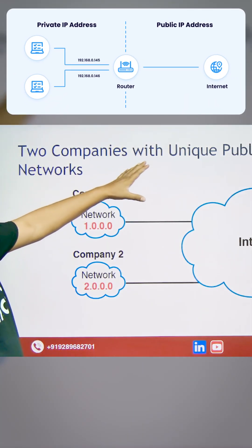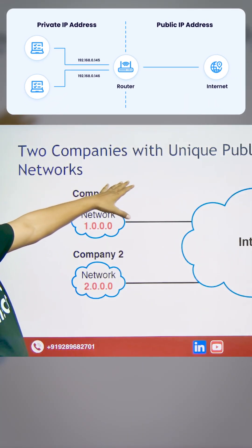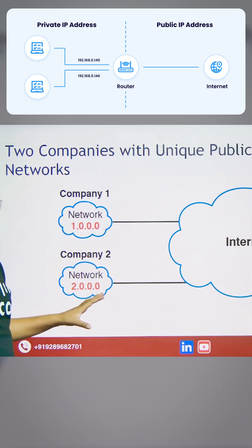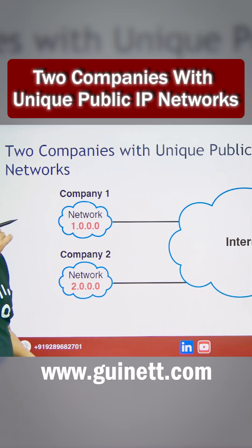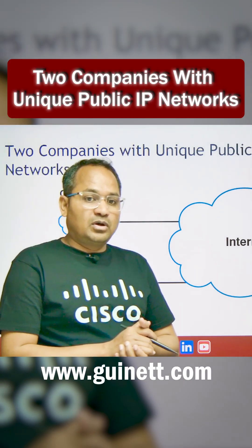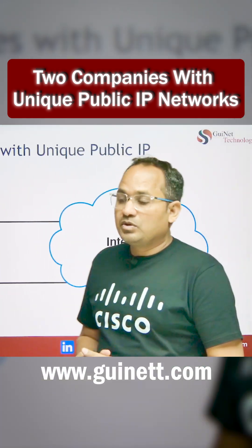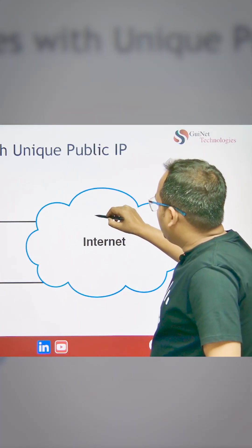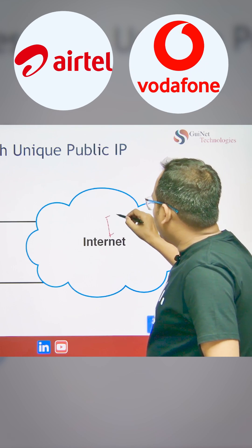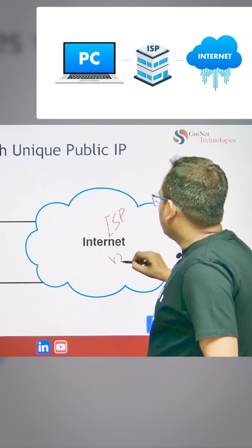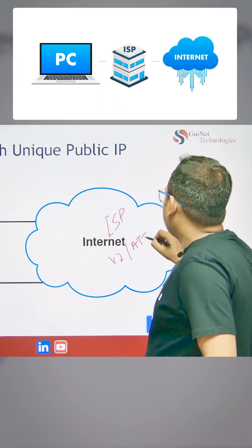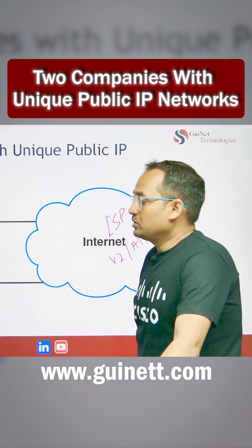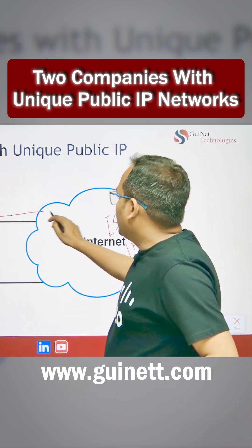Now you have the two companies with the unique public IP address, so how is this going to be connected? Company A and Company B — if two companies want to talk to each other, they cannot do so without the internet. The internet means your ISP — like Airtel, Jio, Verizon, AT&T — these are the ISPs that different companies use to make the connectivity, and they require a public IP address.